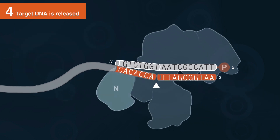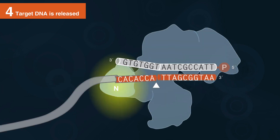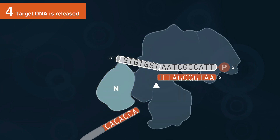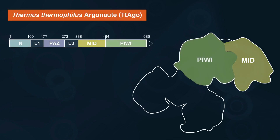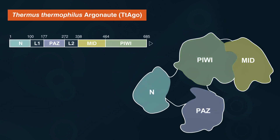The N-domain is thought to then act as a wedge that helps release the target DNA. Thermus thermophilus argonaut, also known as TtAgo, is the first commercially available prokaryotic argonaut from NEB.